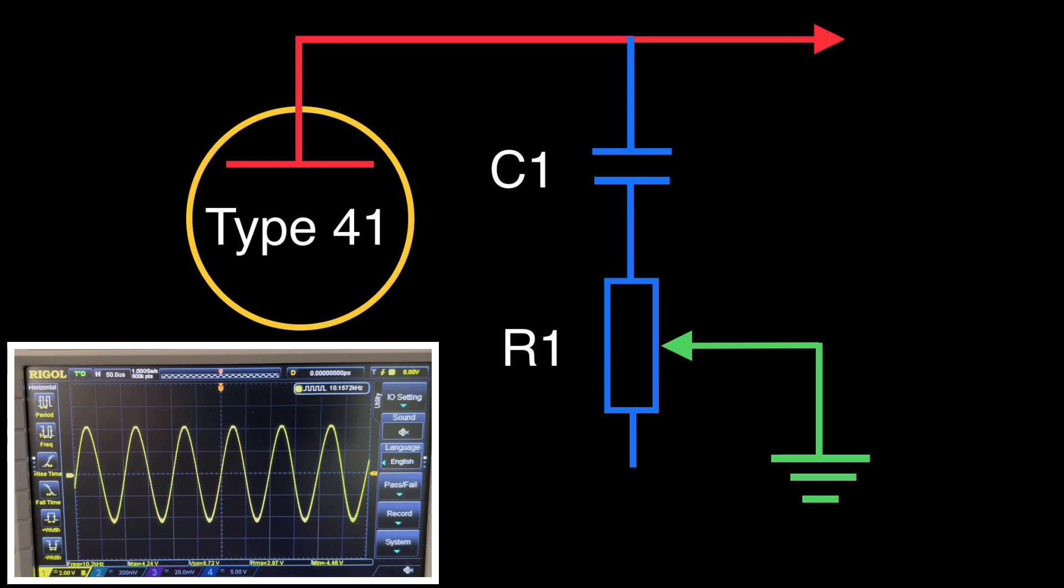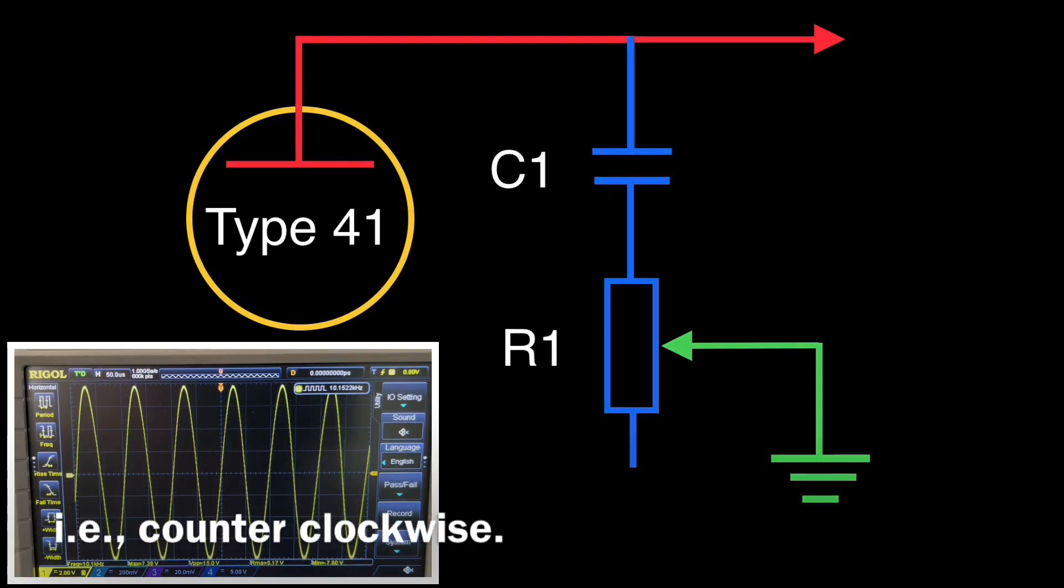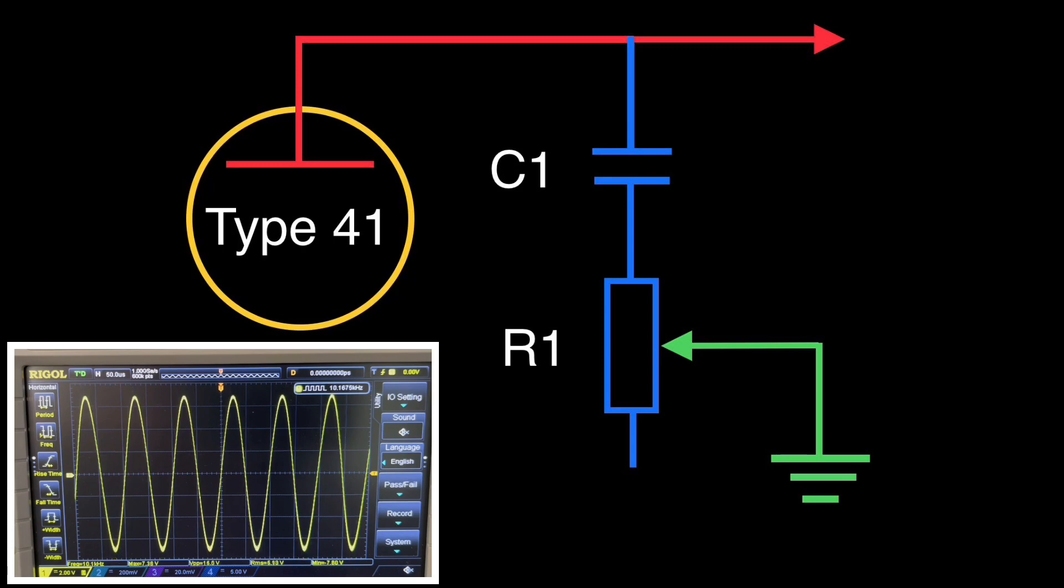As I vary the potentiometer, that is move R1 closer to ground, you can see how it attenuates the higher frequencies. Thus it changes the response to allow more bass to pass and less treble.